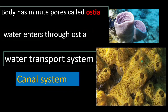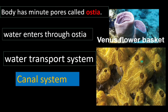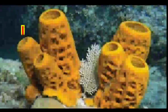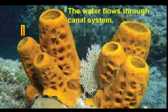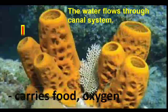Through ostia — the openings — water moves inside the body. Examples include Venus flower basket and another type called Cyclone. Water entering through the canal system carries food material, and as water flows inside the body, the organism also gets oxygen. So the canal system carries both food and oxygen.